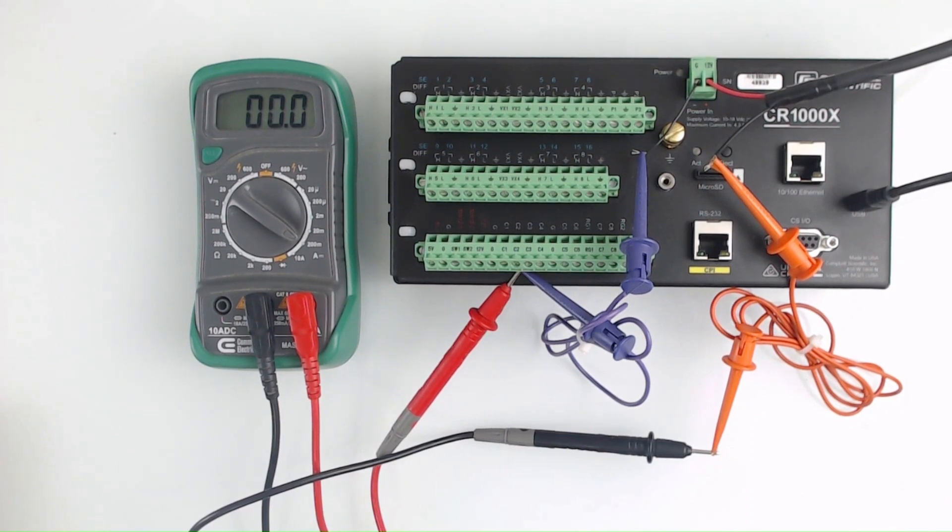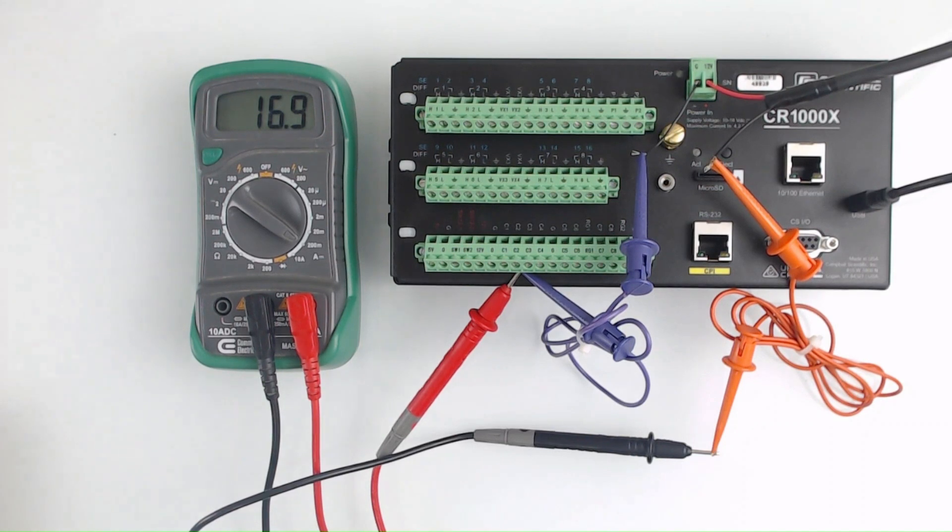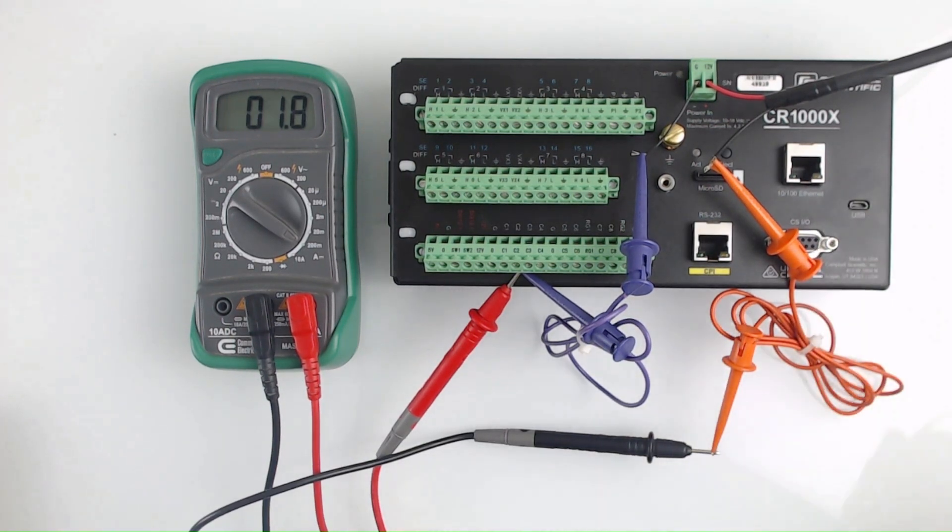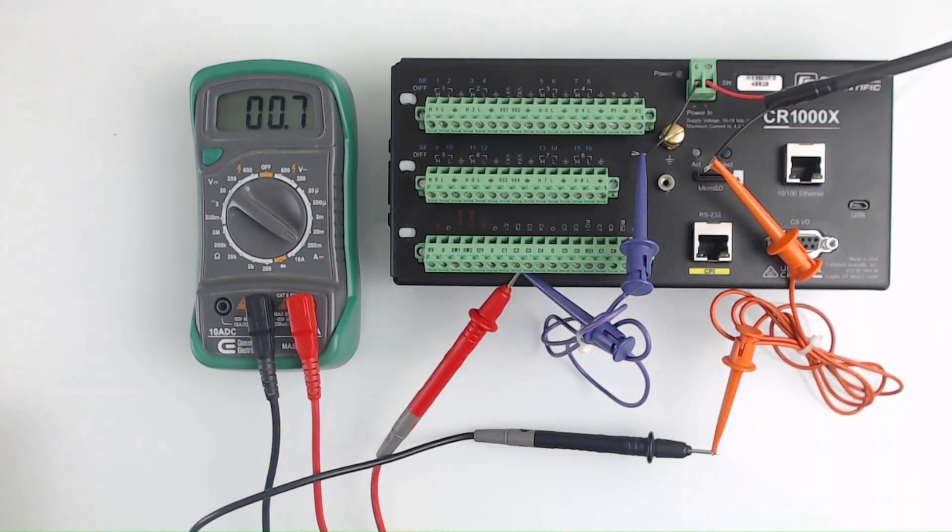The current measurement is now about 17 milliamps. This is a combination of the current drain from the CR 1000 X running its program and its USB port that's communicating with my computer. If I remove USB communication from the system by unplugging this cable, the current drain drops to less than 1 milliamp.